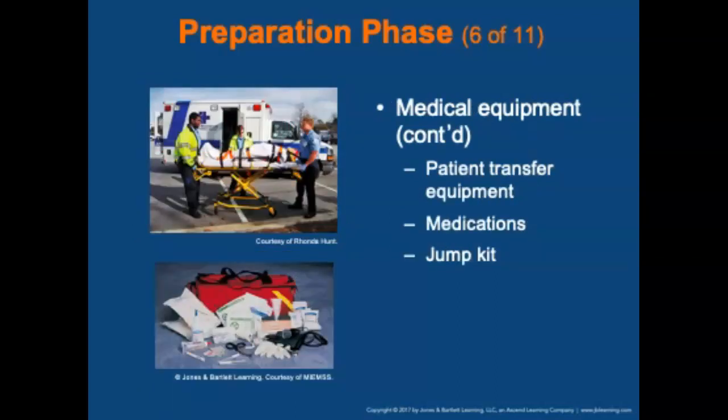You'll also need an ambulance stretcher, which is required to be secured firmly to the floor or side of the ambulance during transport and must have at least three restraining devices for the patient. The ambulance may also include scoop stretchers, folding stretchers, flexible or basket-type stretchers, wheeled stair chairs, long and short backboards, and short immobilization devices. Appropriate medications that have not expired should also be carried.